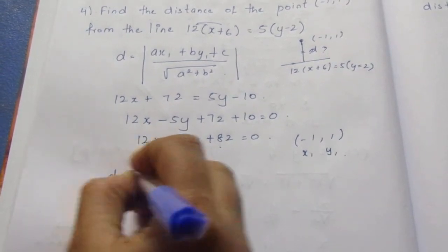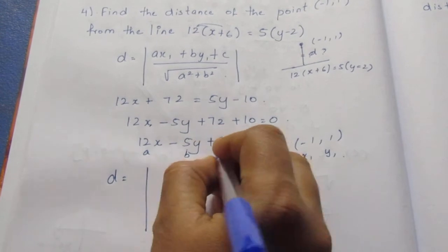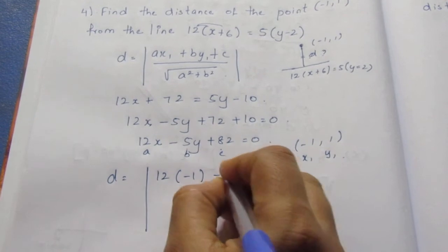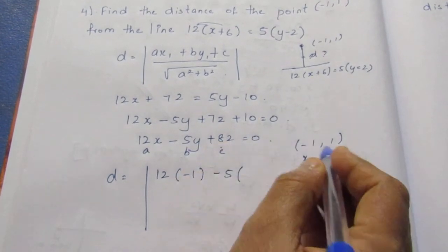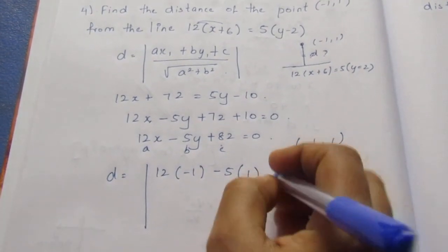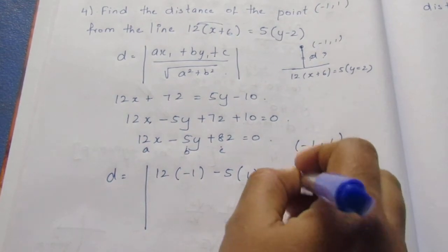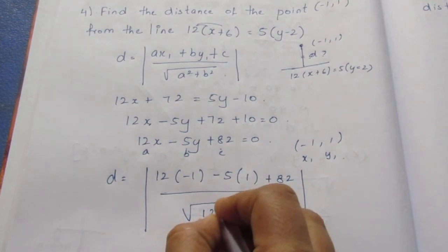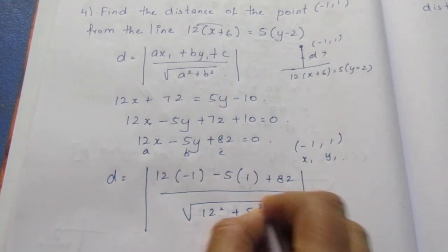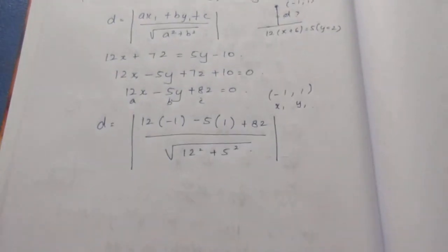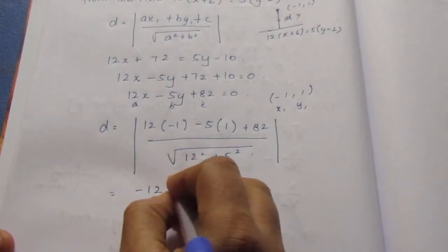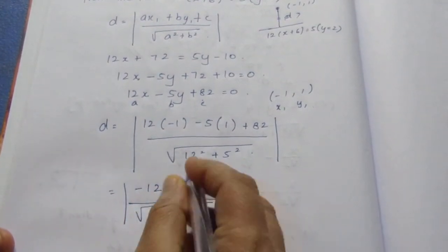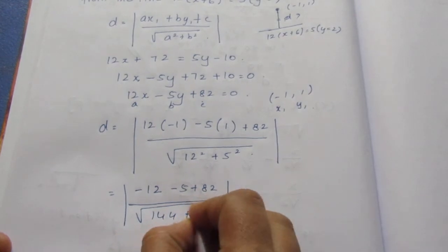So distance is equal to here A, B and C. So A is 12 into (-1) minus 5 into b into y₁ plus 82 by root of 12² plus 5². Now this becomes -12 minus 5 plus 82 by root of 144 plus 25.